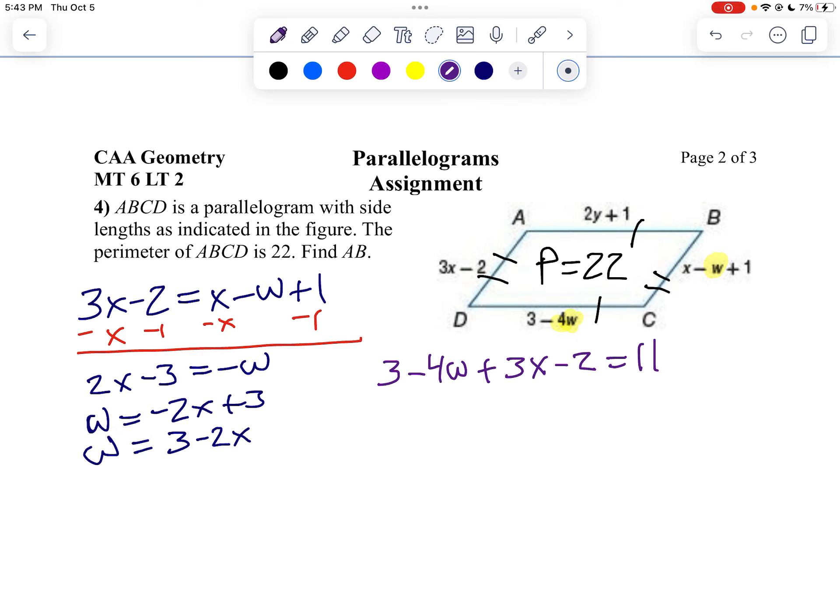And then I can combine some of my like terms. 3 minus 2 is 1, so I get negative 4w plus 3x plus 1 equals 11. In fact, I think I'll just minus my 1 from both sides. So I'll get negative 4w plus 3x equals 10.